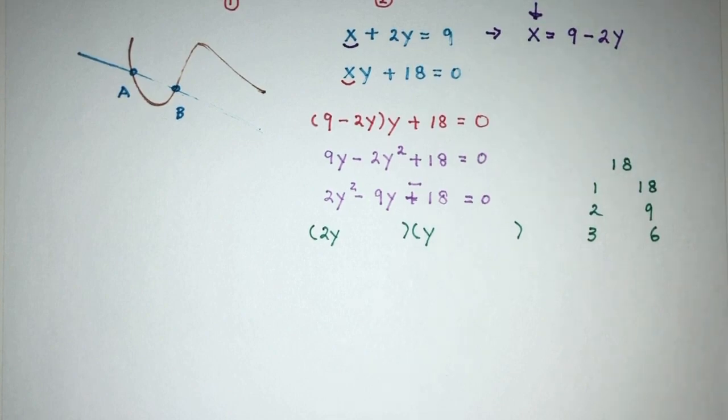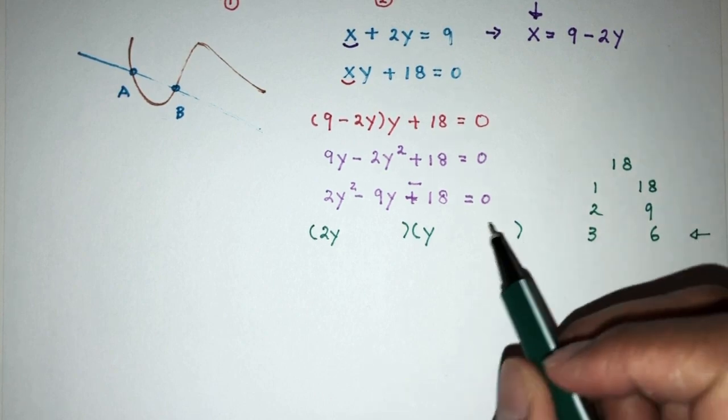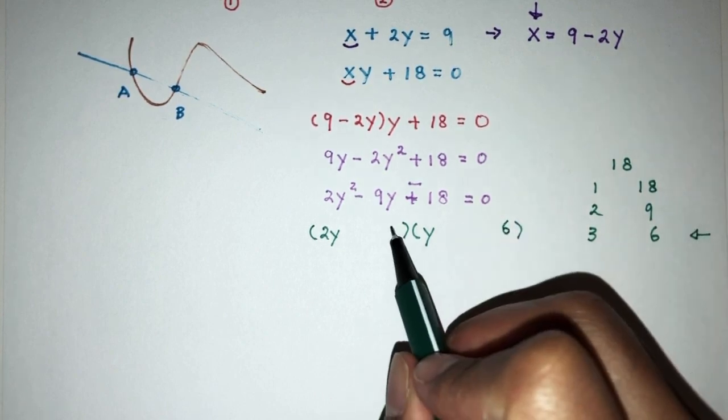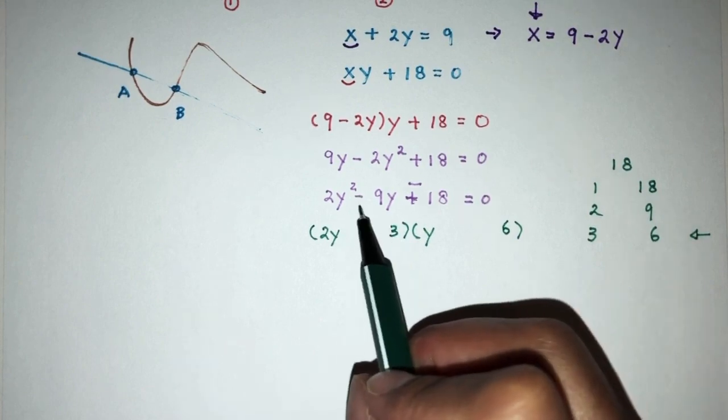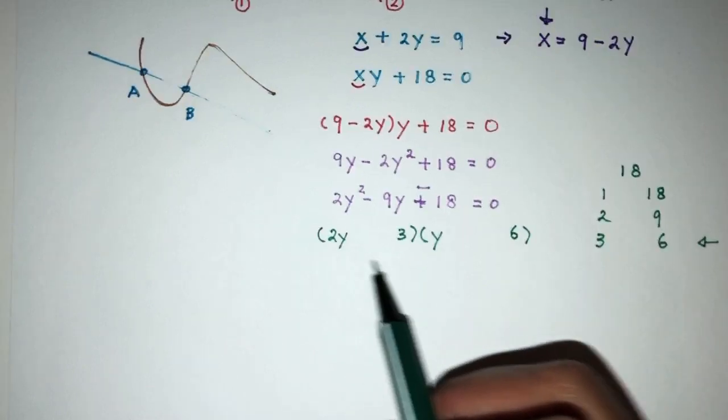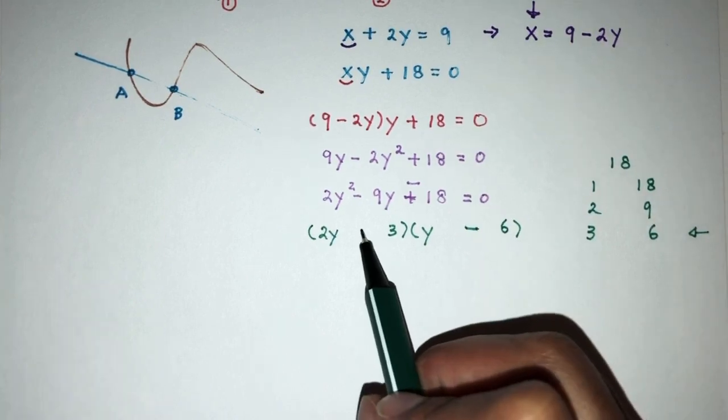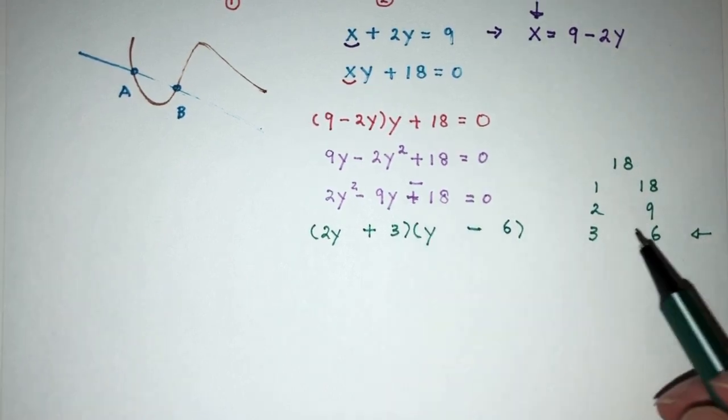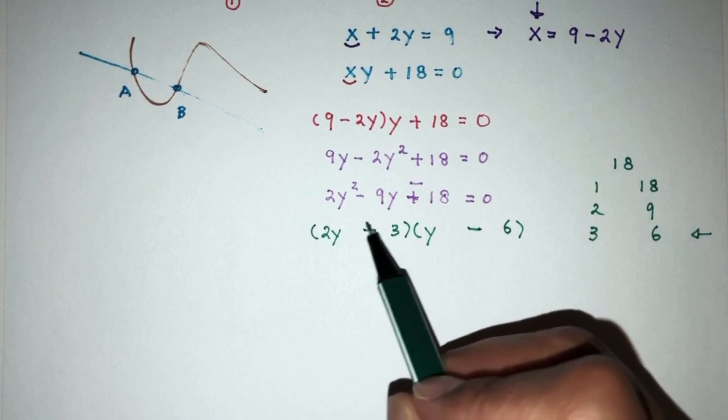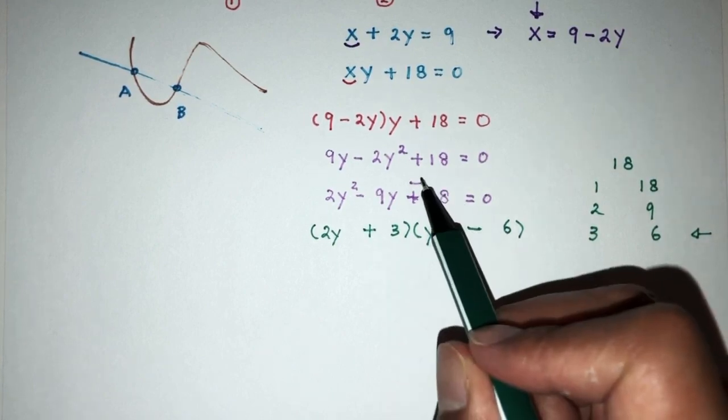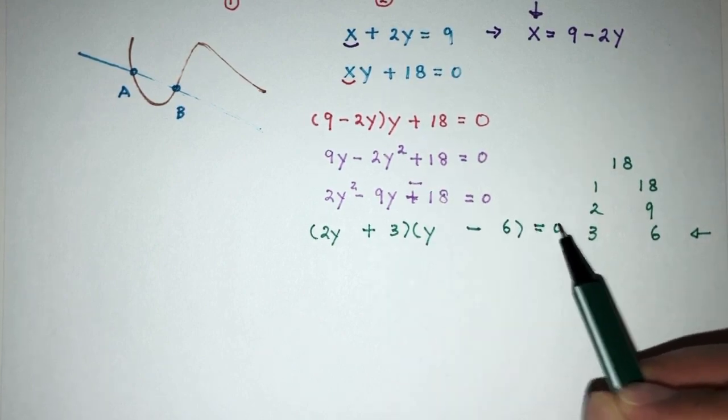Now, for example here I can choose to use this one. So, I can put 6 here and 3 here. I need to have minus 9 so 2y times minus 6 is minus 12 and then plus 3y will give me minus 9 and then test, plus times minus will give you minus so this is good. Confirmed.